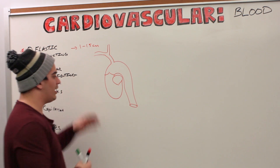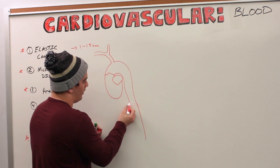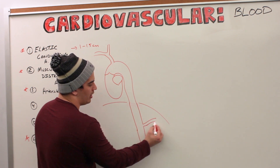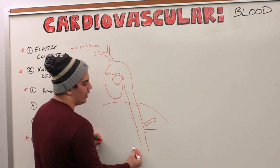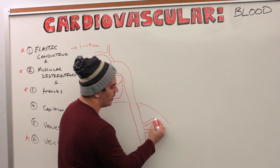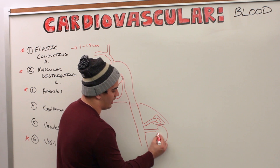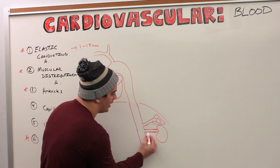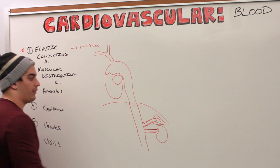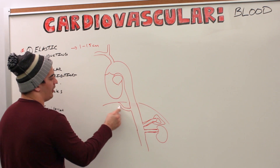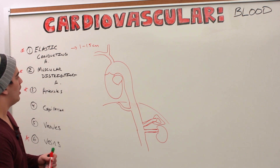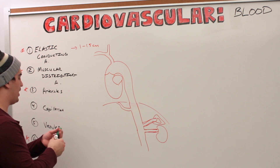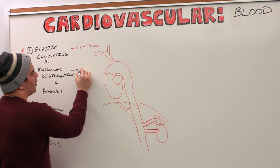Muscular distributing arteries are arteries that deliver blood to a specific organ. For example, off the abdominal aorta you have the suprarenal artery, the renal artery, the gonadal artery, and the superior mesenteric artery. These vessels take blood and deliver it to the tissues. They're high pressure systems with an extremely thick tunica media, and their diameter is about six millimeters due to that thick tunica media.